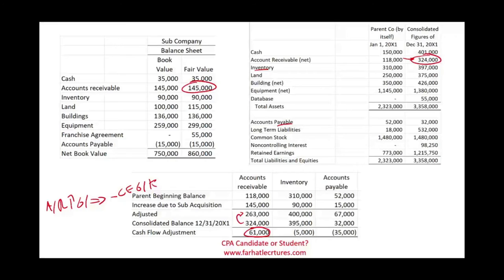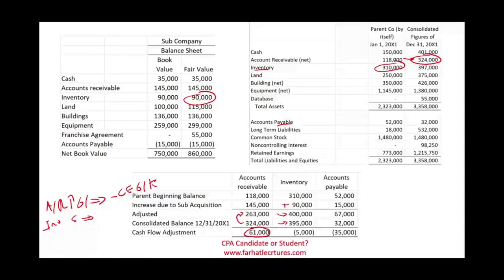For inventory: we started with $310,000, added the subsidiary's inventory of $90,000, giving an adjusted figure of $400,000. The consolidated ending figure was $395,000 — meaning inventory decreased by $5,000. A decrease in inventory is a positive cash flow of $5,000. Remember, when a current asset goes up it's a negative cash flow; when a current asset goes down, like inventory here, it's a positive cash flow.